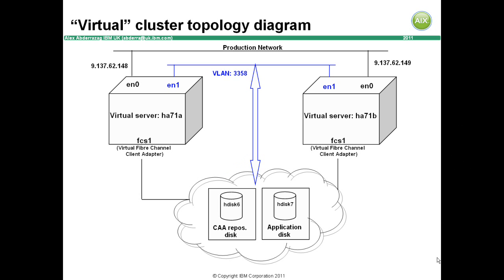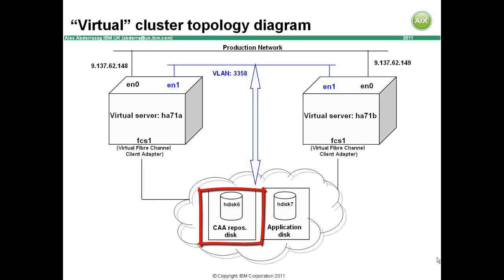The virtual IO server configuration is not shown in the diagram for clarity and PowerVM configuration is outside of the scope of this video. I have configured two SAN disks or LUNs. H-TIS 6 will be used as the cluster aware AIX repository disk. The AIX kernel is now cluster aware and stores critical configuration data on this single disk. PowerHA 7.1 is the first version to use the CAA infrastructure.